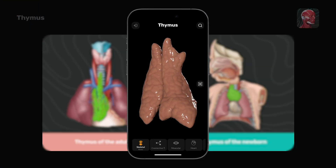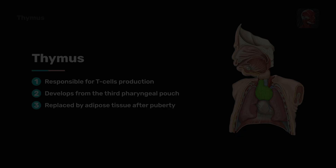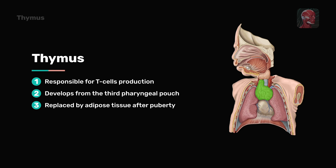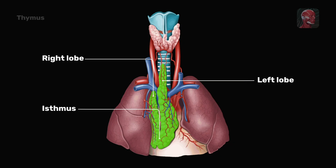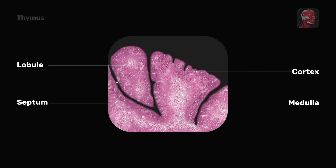Here's a quick summary. The thymus is a primary lymphoid organ located in the mediastinum, responsible for producing T-cells by maturing thymocytes. It is most active during childhood, but after puberty gradually decreases in size and is replaced by adipose tissue. The thymus is composed of two lobes connected by an isthmus. Small septa divide the thymus into lobules, each containing a peripheral dark zone known as the cortex and a central lighter zone called the medulla.